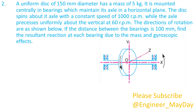Here is a second question. A uniform disc of 150mm diameter has a mass of 5kg. It is mounted centrally in bearings which maintain its axle in a horizontal plane. The disc spins about its axle with a constant speed of 1000rpm, while the axle precesses uniformly about the vertical at 60rpm. The directions of rotation are as shown below. If the distance between the bearings is 100mm, find the resultant reaction at each bearing due to the mass and gyroscopic effects.